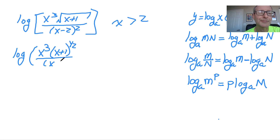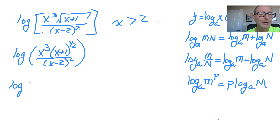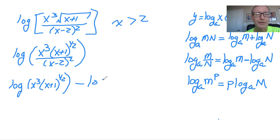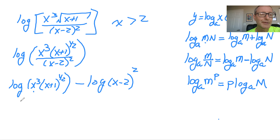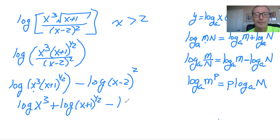Now use the quotient rule — leave the denominator as is. That gives us log of x cubed times (x plus 1) to the one-half power, minus log of (x minus 2) squared. In the first log we have a multiplication, so we use the product rule where m is x cubed and n is (x plus 1) to the one-half. So now we have three logs: log of x cubed, plus log of (x plus 1) to the one-half, minus log of (x minus 2) squared.